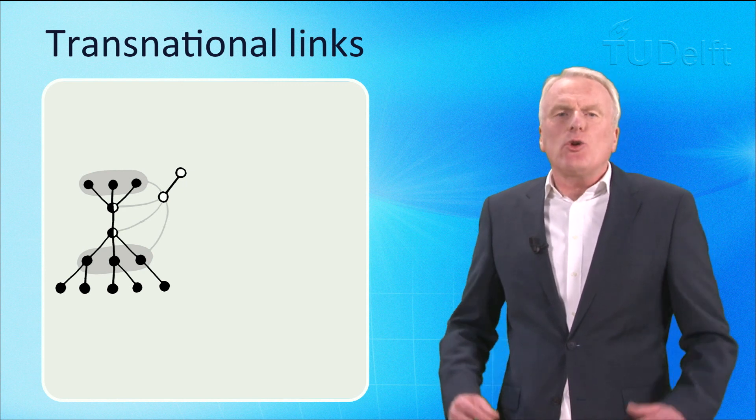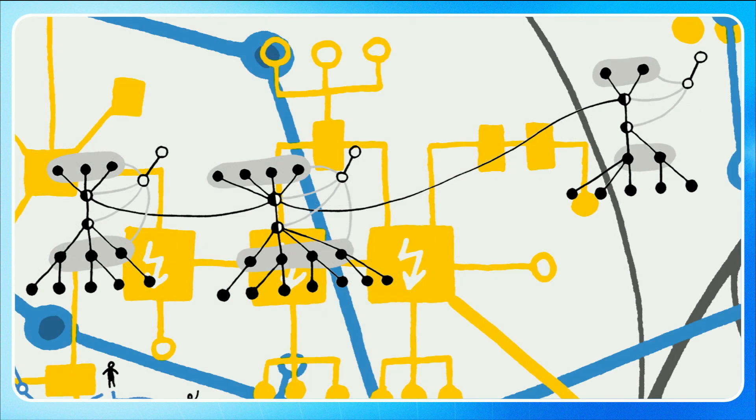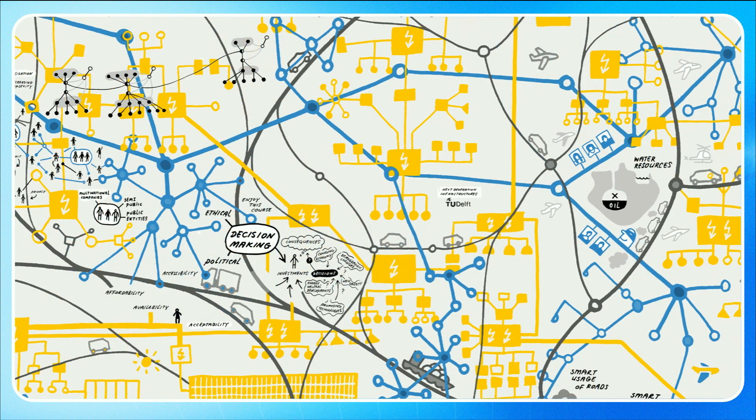Networks are increasingly linked across national borders to the networks in neighbouring countries. This applies for instance to railway networks, energy networks and telecom networks. The internet has been a global network from the start. As a result of these transnational links, foreign players are also starting to play a role in the domestic networks.